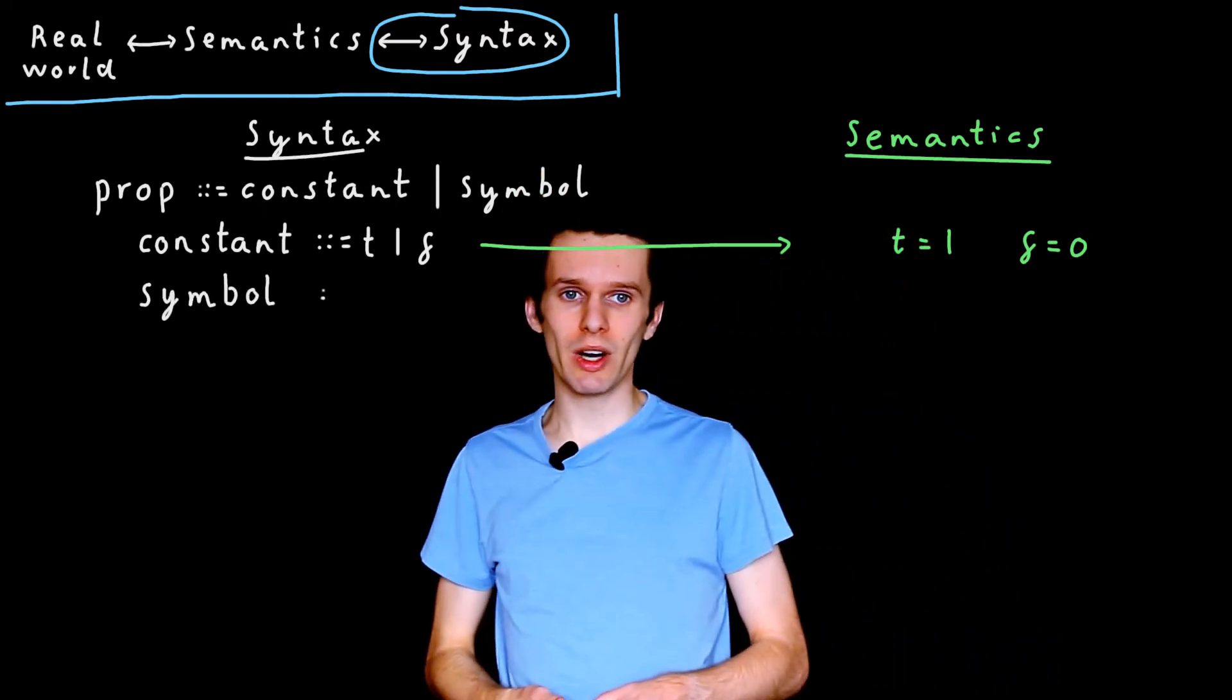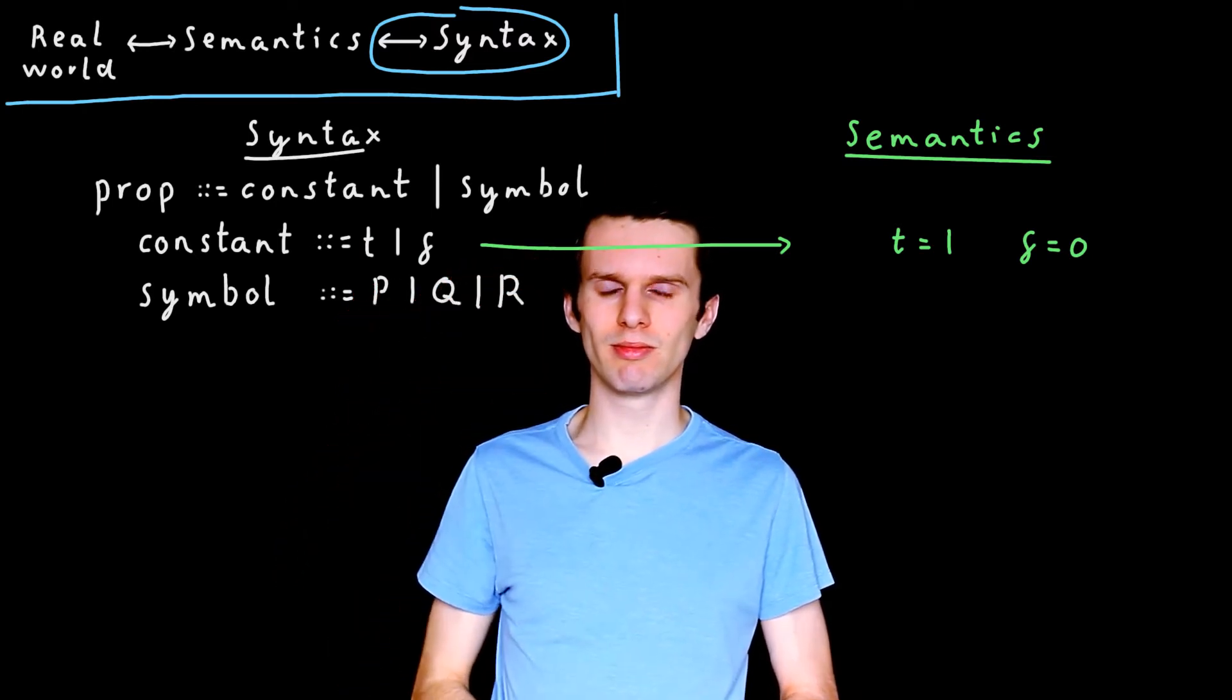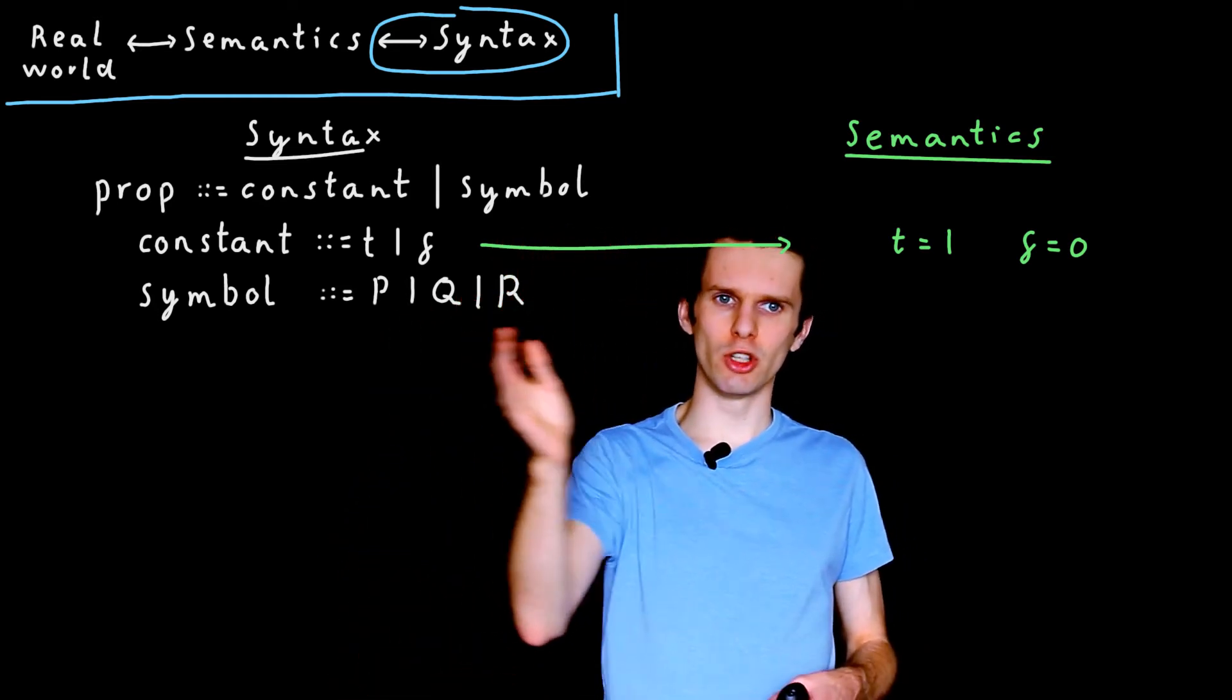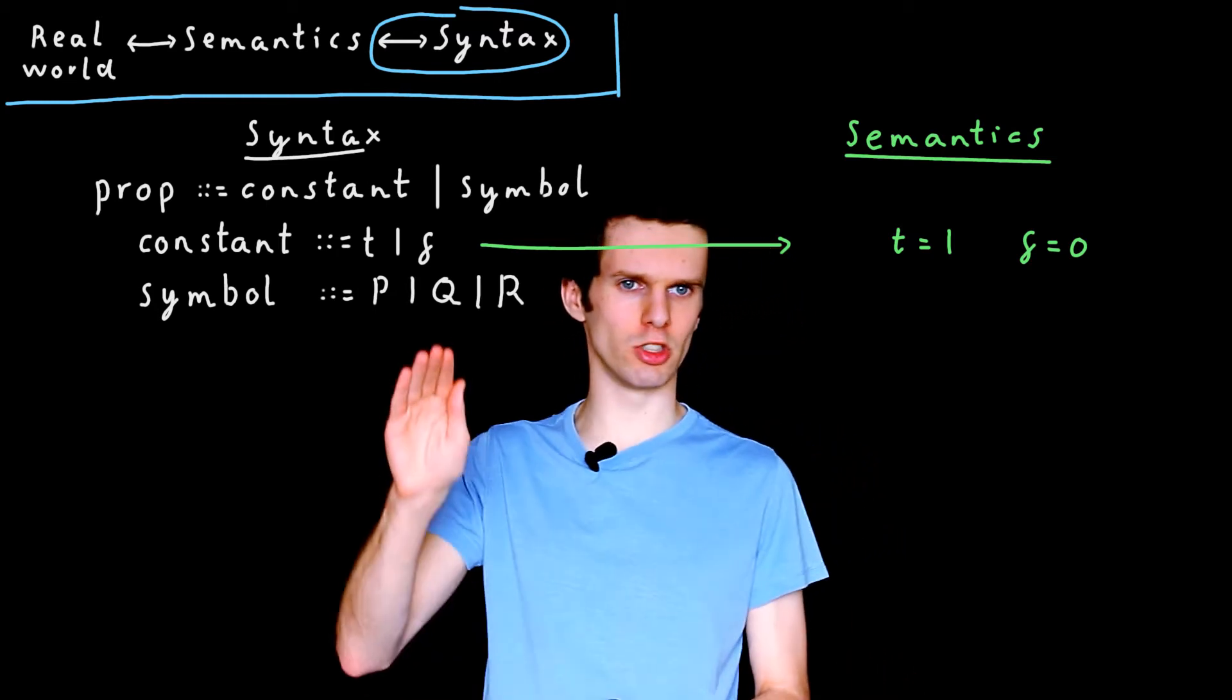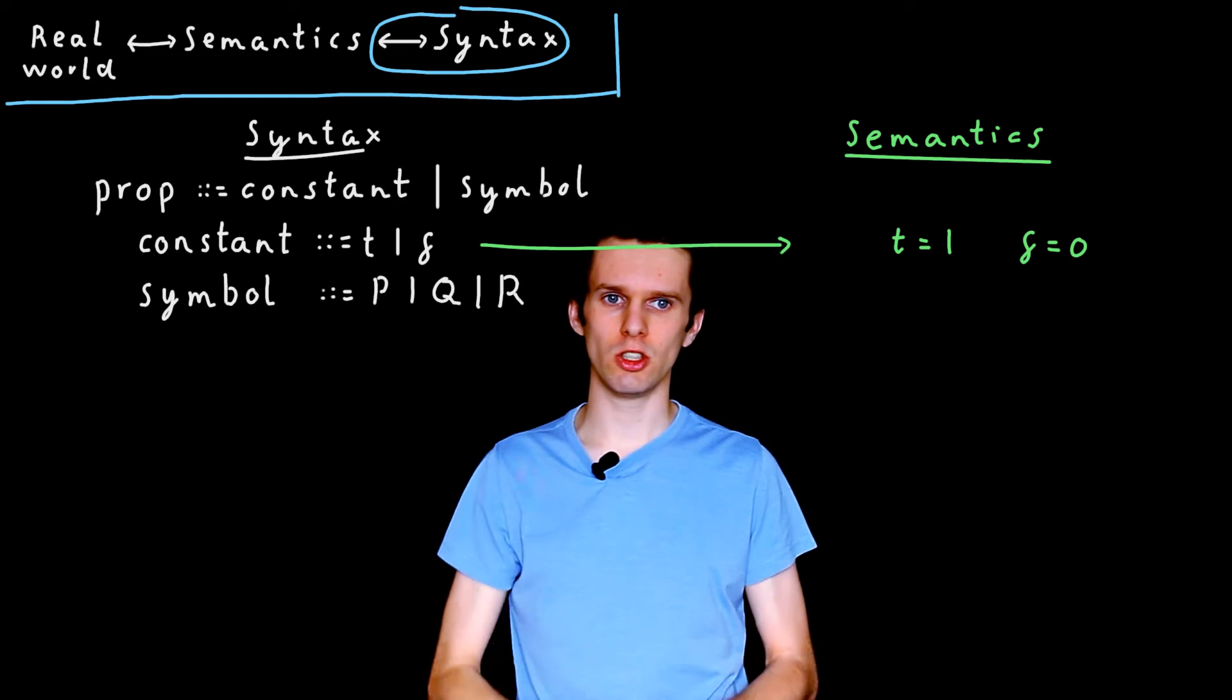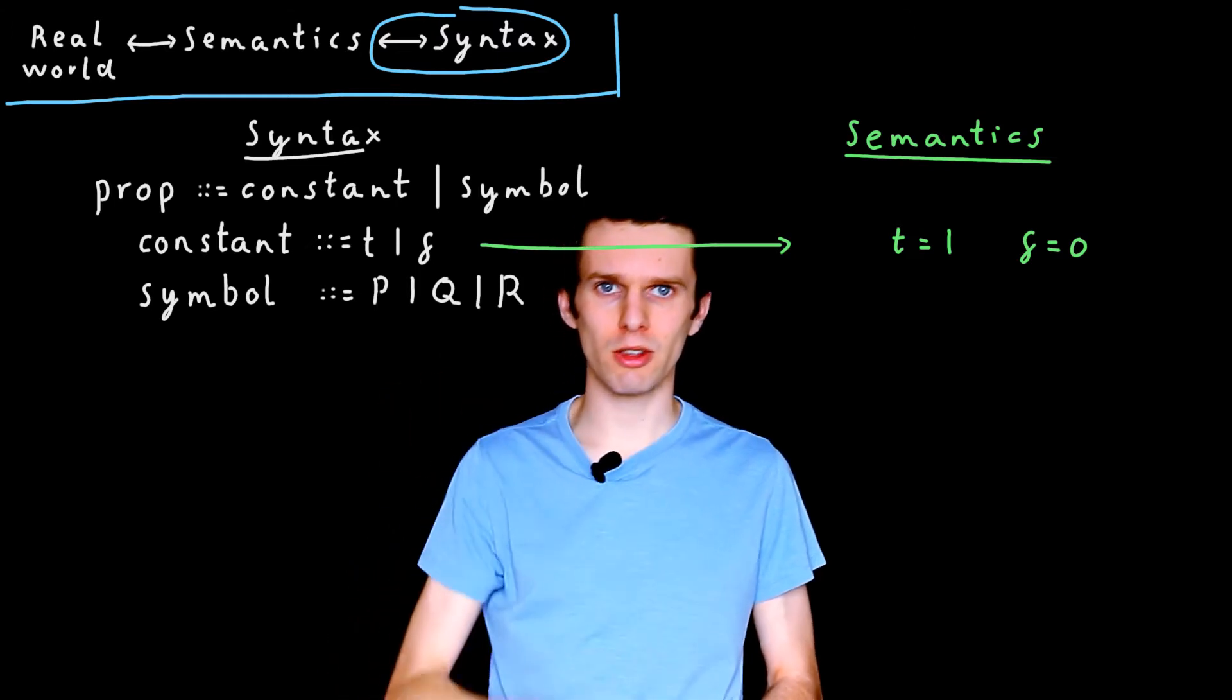What's a symbol? Well, it's simply the letter P, or the letter Q, or the letter R. And actually, there is some implicit assumption in this that there are an infinite number of these available to us. We want to be able to reason about more than just three sentences. And perhaps in reality, we would continue along the alphabet P, Q, R, S, T, or maybe we would subscript these. So P1, P2, P3.